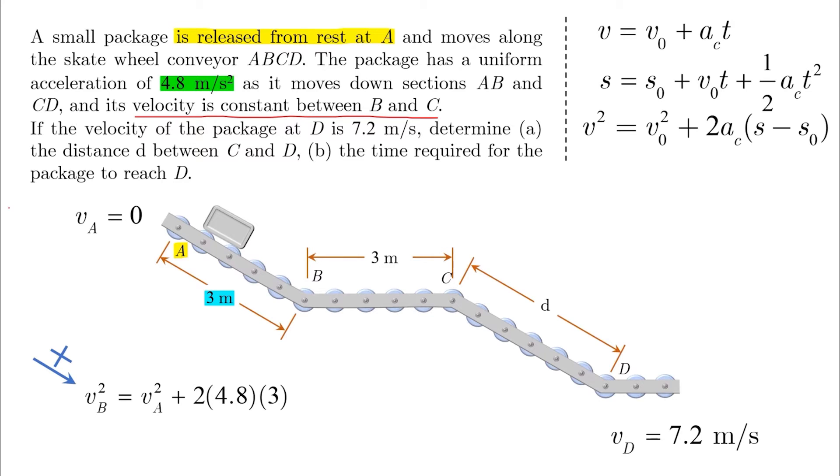Note the assumed positive direction, which is consistent with the displacement and acceleration given. The result is VB equals positive or negative 5.37 meters per second, but we take the positive solution because it's the physically correct solution.